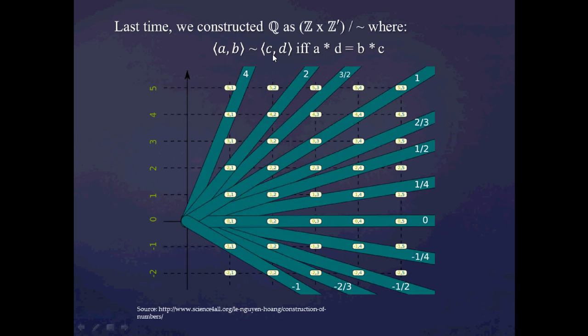Just like our previous constructions, this has a very nice visual interpretation. We construct this grid and take that as a representation of the Cartesian product Z × Z'. We say that the equivalence relation tilde is going to partition this grid into the rational numbers.